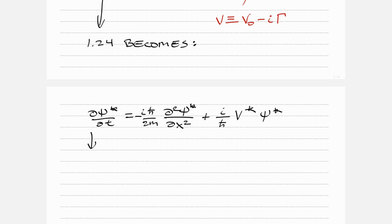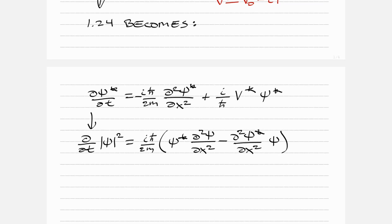As you follow along in the book, equation 1.25 becomes d/dt of |ψ|² equals iℏ bar over 2m times ψ* d²ψ/dx² minus d²ψ*/dx² times ψ.